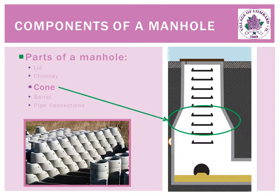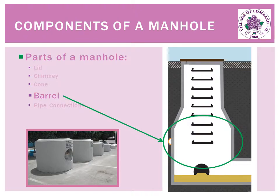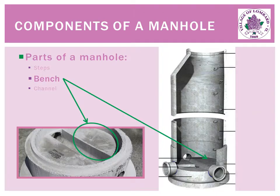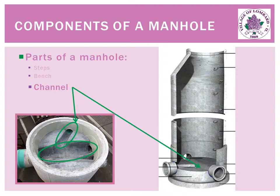Below the chimney is the cone section, providing the transition from the narrow chimney to the wider chamber. Below the cone is the barrel, which serves as the chamber of the structure. Pipe connections of varying elevations, diameters, and directions all meet the manhole at the chamber. At the bottom of the inside of the manhole is the base of the structure, referred to as the bench. Inside the base is the channel — an open groove in which wastewater from upstream pipes can flow smoothly into downstream pipes.